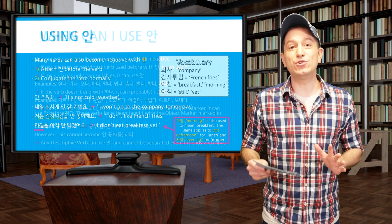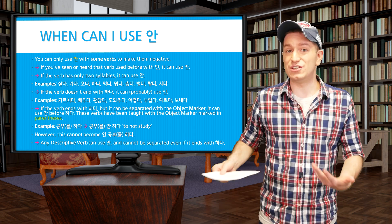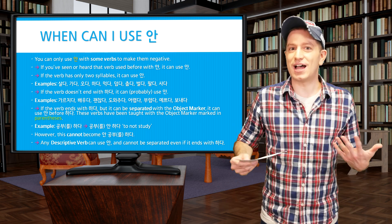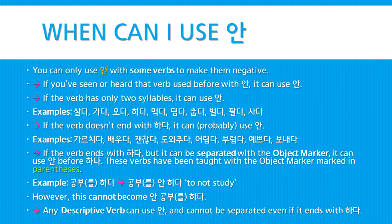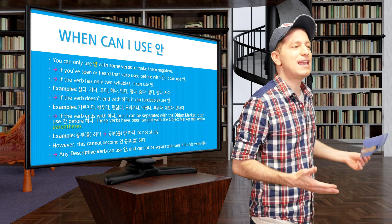So let's talk about when you can just use 안 to make a verb negative. There are a few tips. First, if you've seen a verb use 안 before it, then it can use 안. Second, if the verb only has two syllables, it can use 안 — for example: 살다 (to live), 가다 (to go), 오다 (to come), 하다 (to do), 먹다 (to eat), 덥다 (to be hot), 춥다 (to be cold), 벌다 (to earn), 팔다 (to sell), 사다 (to buy), and many others. Also, if the verb does not end with 하다, it can probably use 안 before it to make it negative.